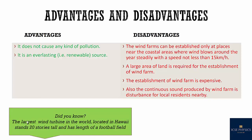Now what are the advantages and disadvantages of using wind energy? First, it does not cause any kind of pollution. It is an everlasting or renewable source of energy. Disadvantages: the wind farms can be established only at places near the coastal areas where the wind blows around the year steadily with a speed not less than 15 km per hour. A large area of land is required and establishment of wind farm is expensive. Also, the continuous sound produced by the wind farm is a disturbance for local residents nearby.